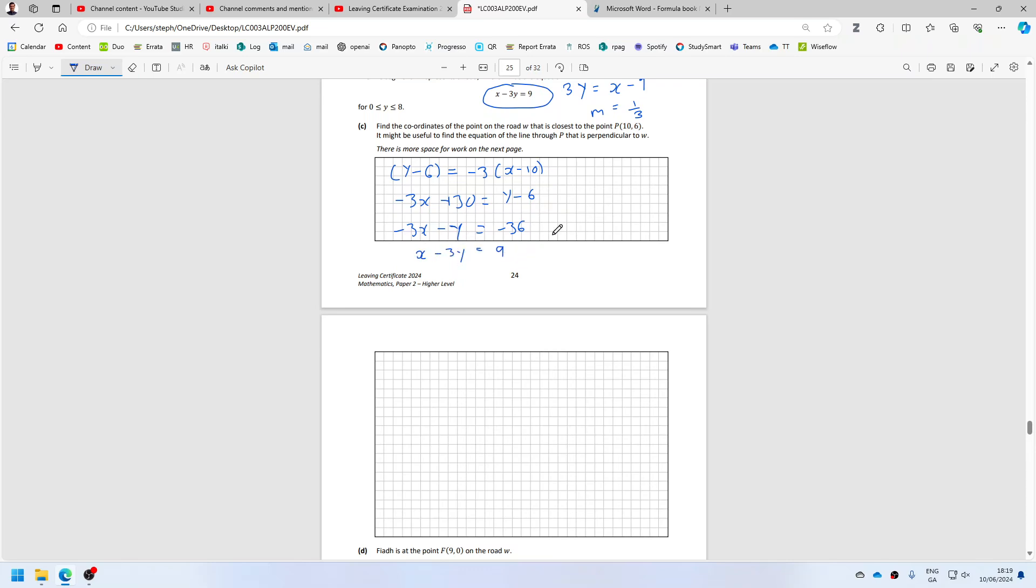Let us just multiply this by 3. Minus 9x minus 3y equals minus 108.